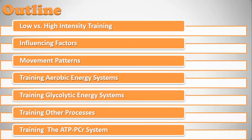These are the different sections of this video session. First we're going to focus on low versus high intensity training. Then we'll talk about factors that influence which energy system you target, and the influence of movement pattern on which energy system you'll train. Then we'll cover how you train the aerobic energy system, the glycolytic energy system, other important processes in mixed martial arts, and finally the ATP-PCR system.